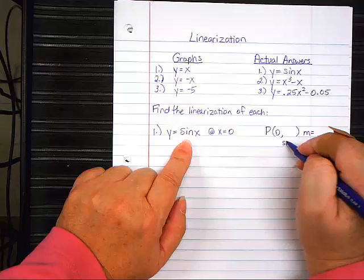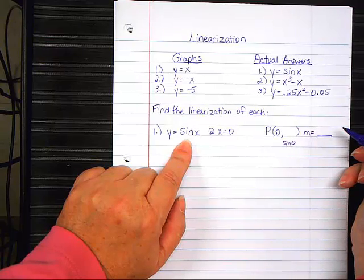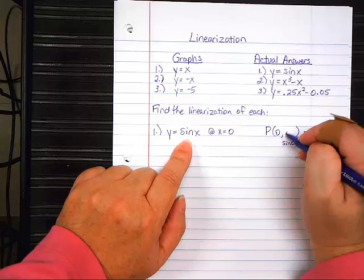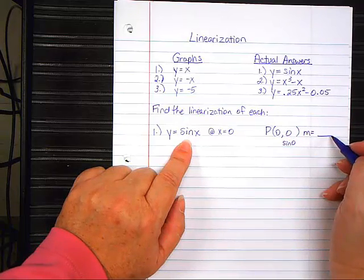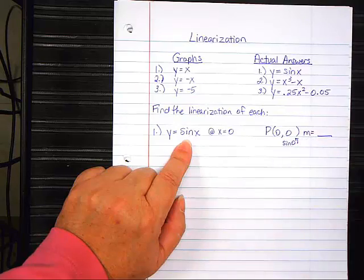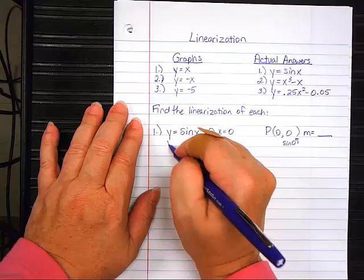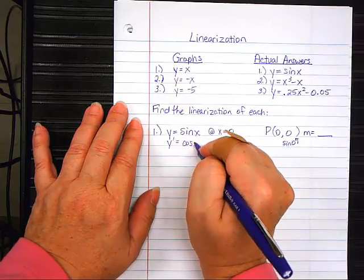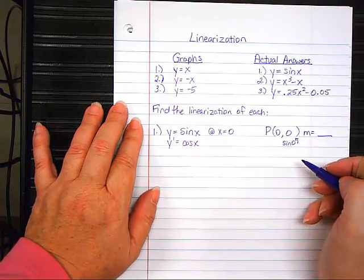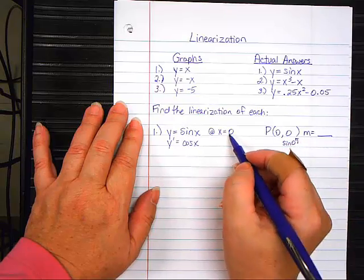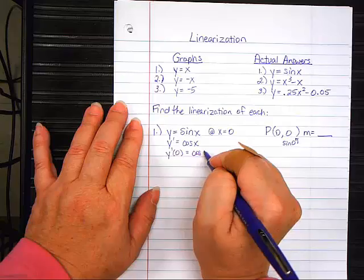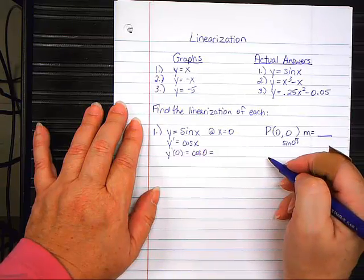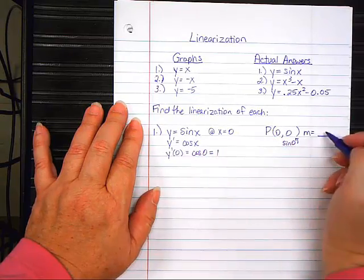How do I find the Y to go with it? Plug it into the original. So, the sine of zero is zero. Now, to find the slope, how do I find the slope? Take the derivative. And what do I do with that again? Plug in zero because it's at zero. So, Y prime at zero is the cosine of zero, which is one. Slope goes there.